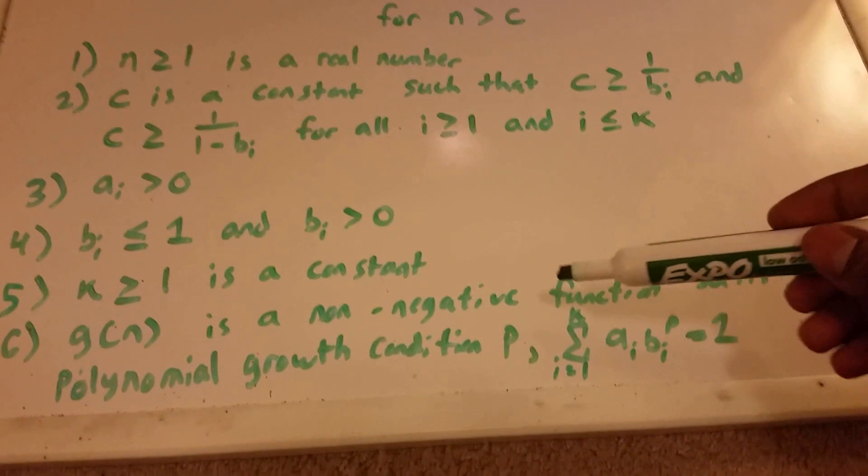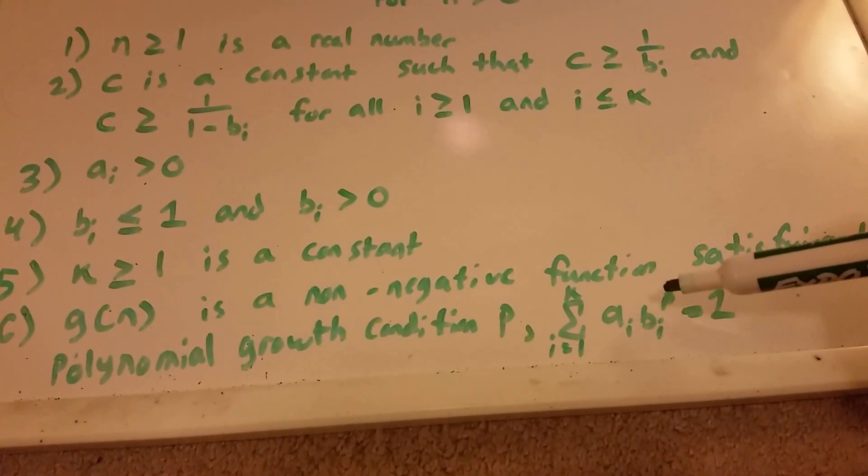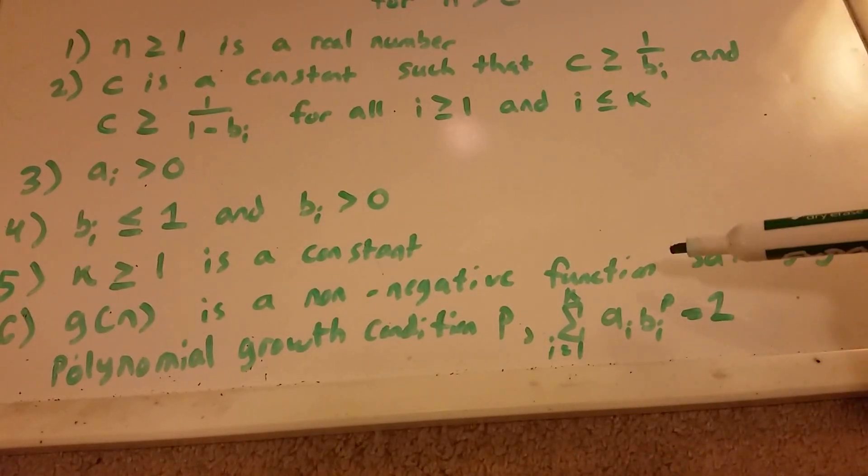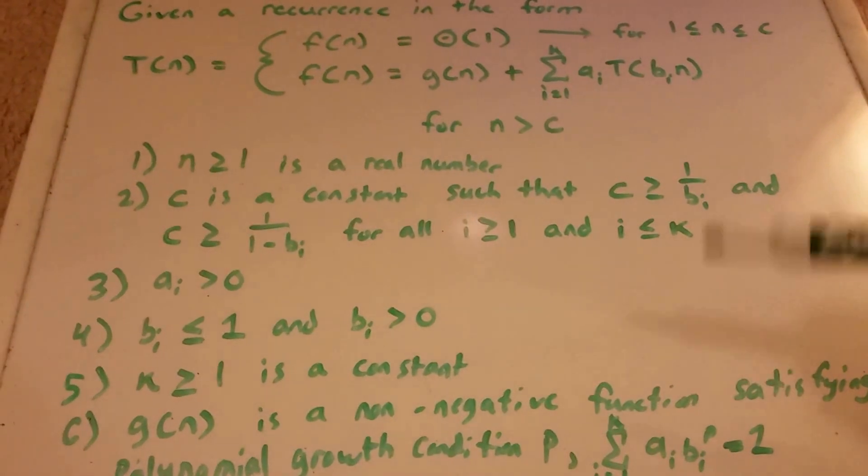And our function g of n is a non-negative function satisfying the polynomial growth condition p. And the condition is summation i equals 1 to k, a subscript i times b subscript i to the power of p must equal 1. So this is actually a lot.